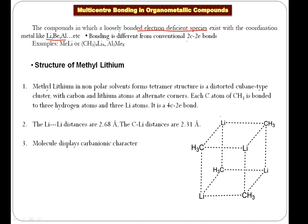The bonding in these compounds is not conventional. In conventional sigma or pi bonds — called two-center two-electron bonds — two atoms and two electrons are involved. But multi-center bonds are not conventional two-center two-electron bonds.